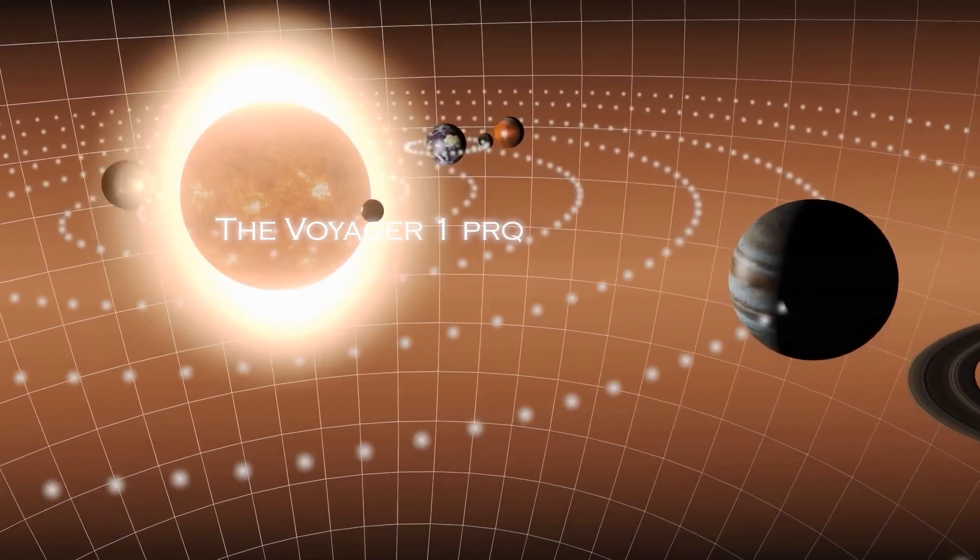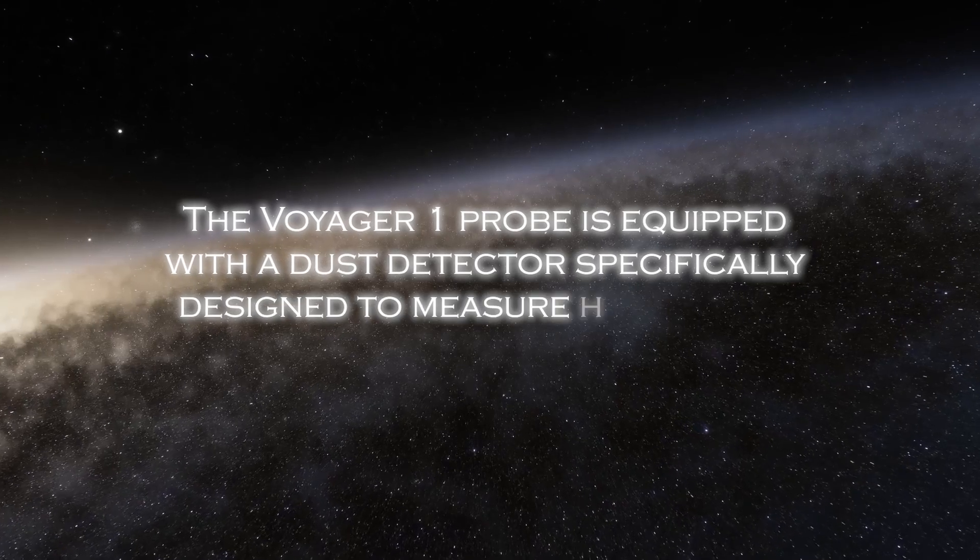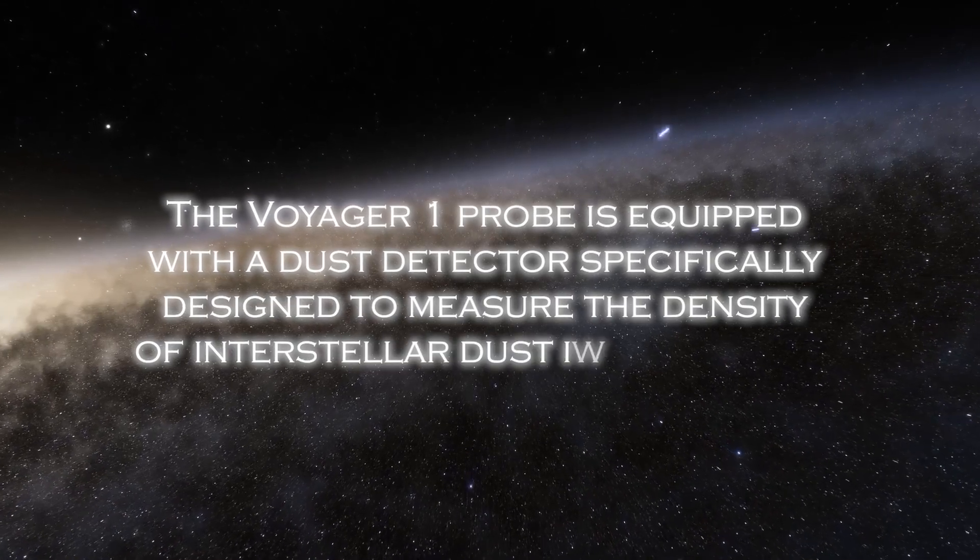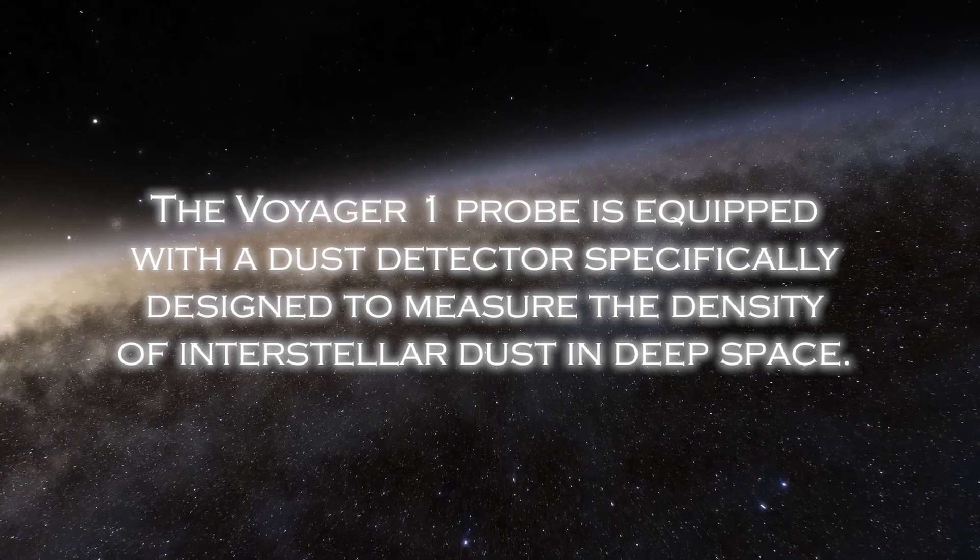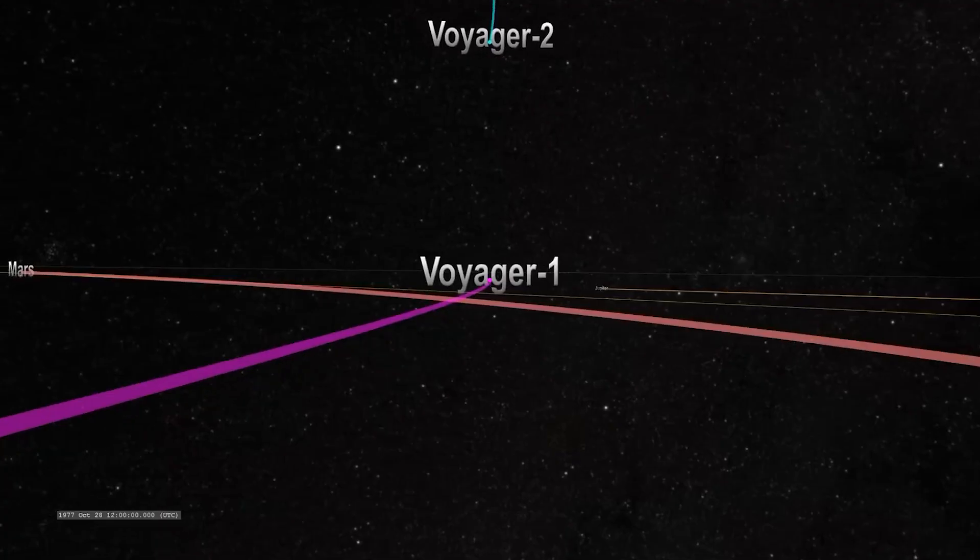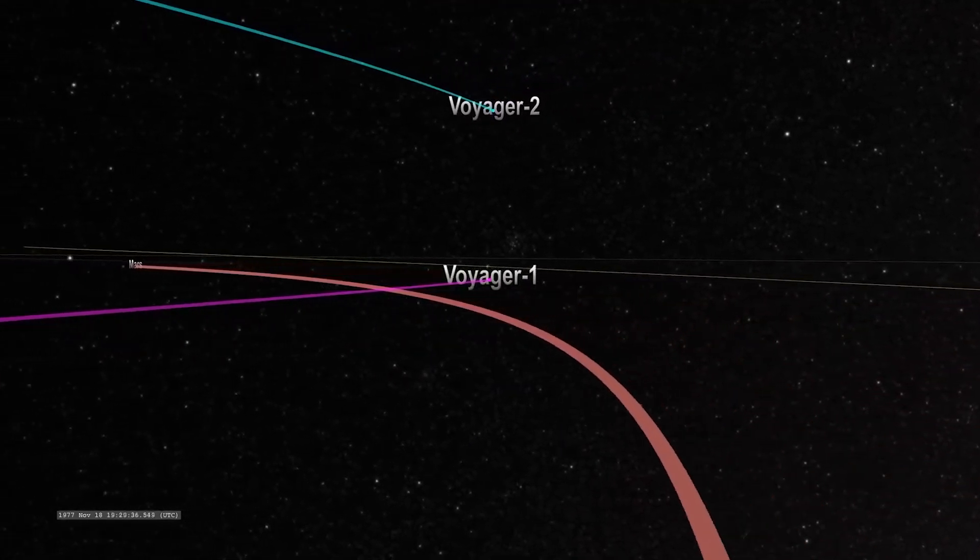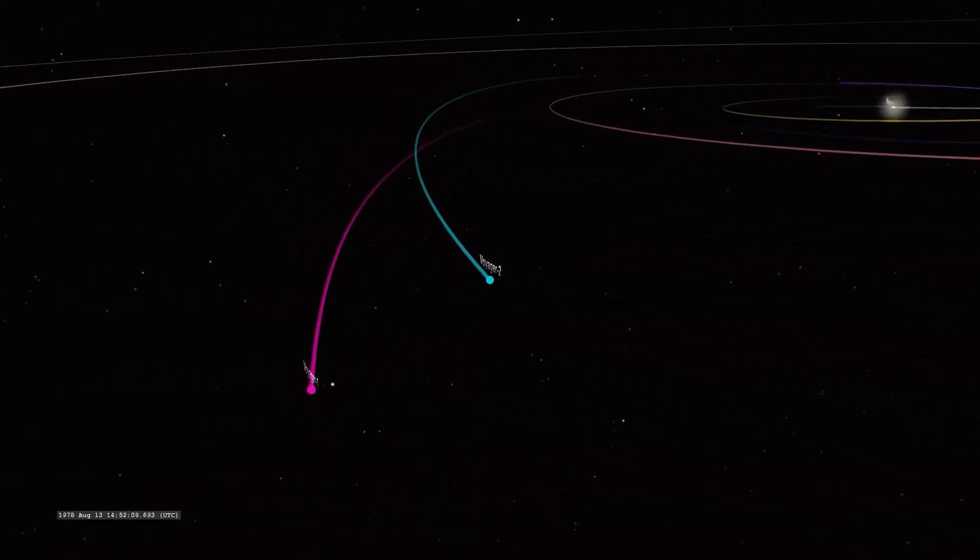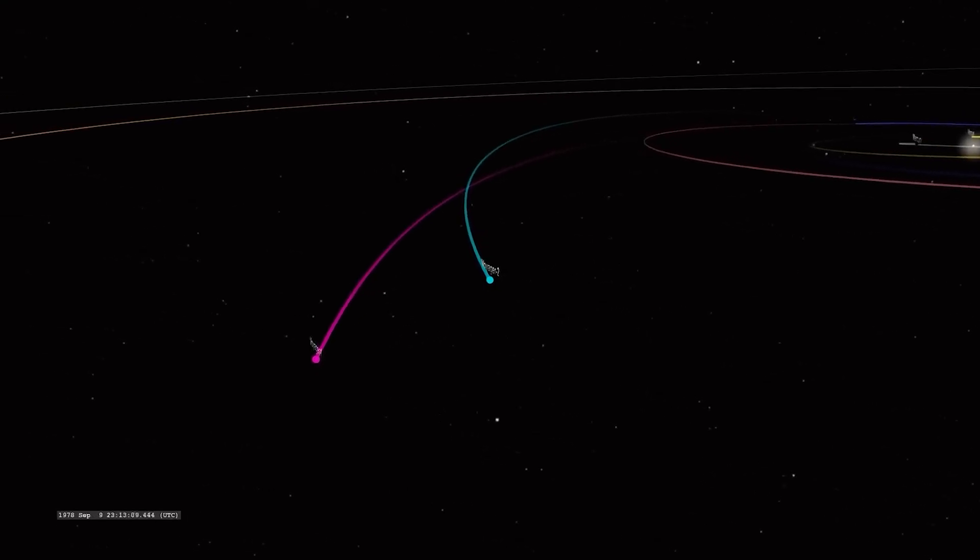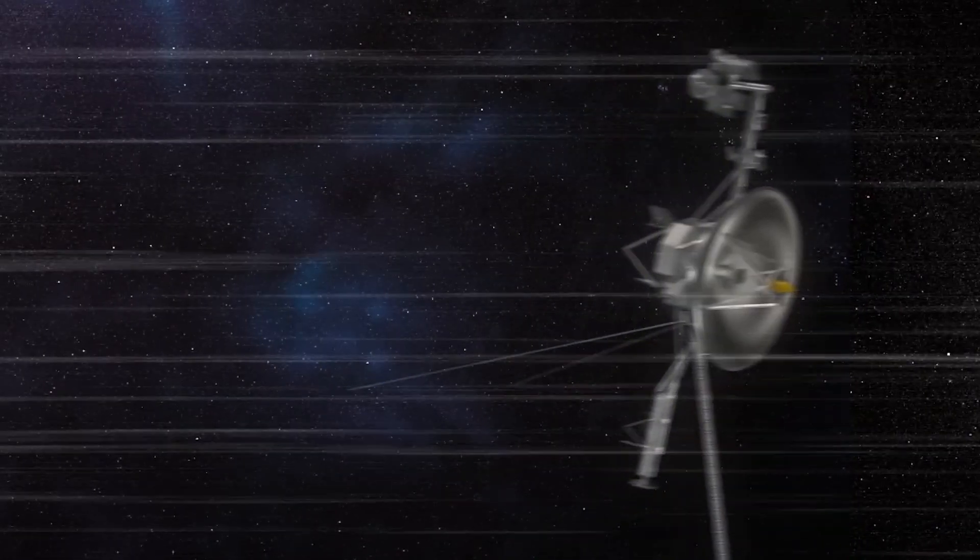The Voyager 1 probe is equipped with dust detectors, specifically designed to measure the density of interstellar dust in deep space. However, communication with Voyager 1 has become more difficult due to the limited resources NASA's global antenna system has to receive the mission signals. This has resulted in less frequent communication opportunities.